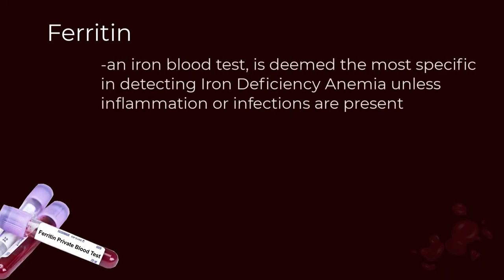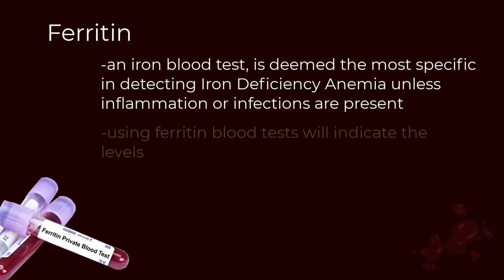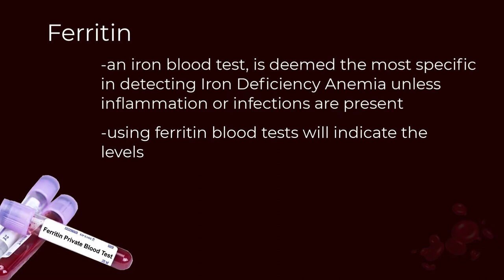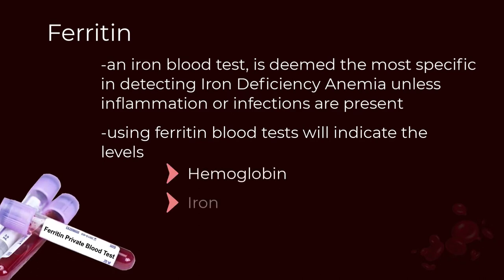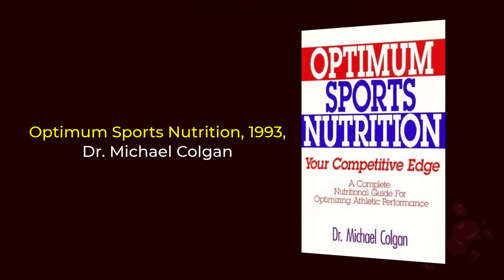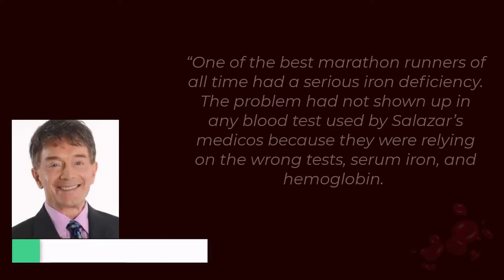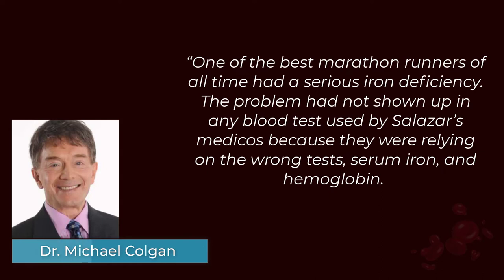A ferritin iron blood test is deemed the most specific in detecting iron deficiency anemia, unless inflammation or infections are present. Ferritin blood tests indicate the levels of hemoglobin, iron, and red blood cells, among others. In his book Optimum Sports Nutrition (1993), Dr. Michael Colgan points out that one of the best marathon runners of all time had a serious iron deficiency that had not shown up in any blood test used by Salazar's medicos.